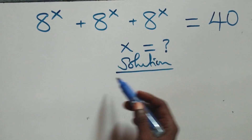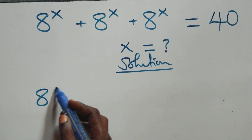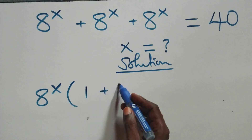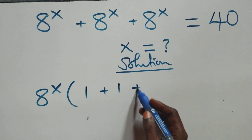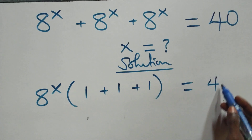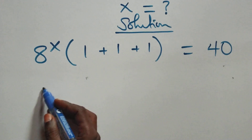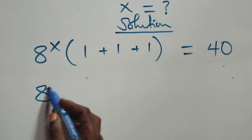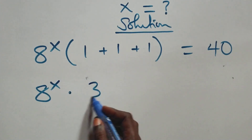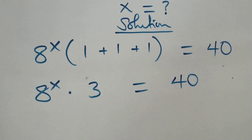What we have here: we factor 8 raised to the power x out. That is, we have 8 raised to the power x, into bracket 1 plus 1 plus 1, equals to 40 on this side. Then here we have 8 raised to the power x times 1 plus 1 plus 1, that is 3, equals to 40 on this side.